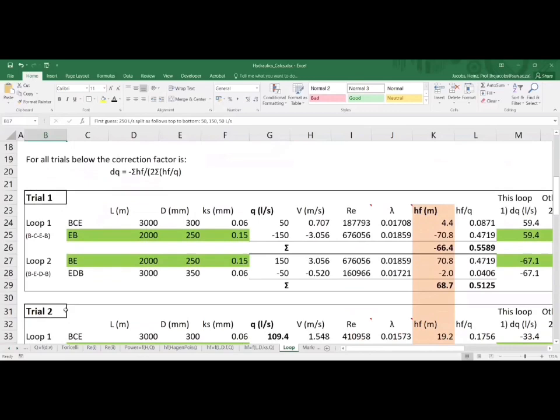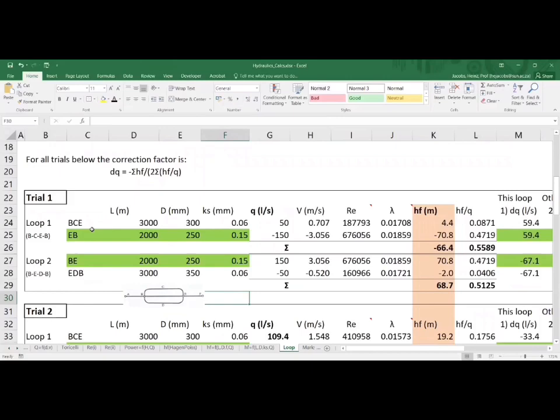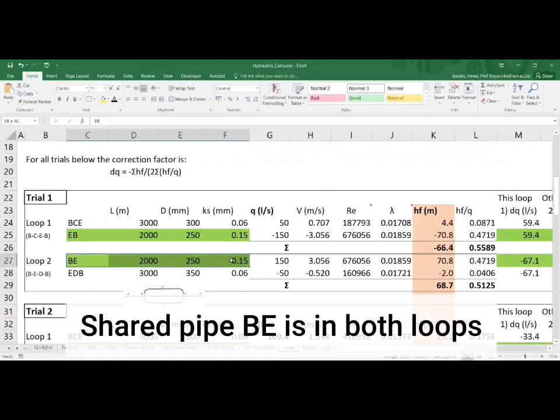Now, list values for length, diameter, and Ks in the first columns. Separate the table for loop one and for loop two and notice the shared pipe BE that appears in both loops.